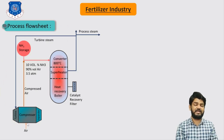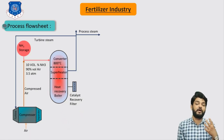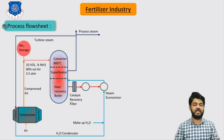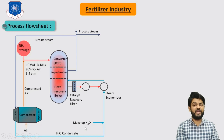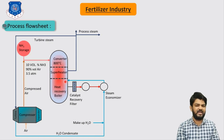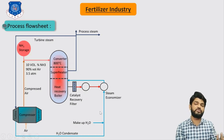Moving to the next point: the product stream coming out of the tube side is sent to the catalyst recovery section, where we recover our precious platinum-rhodium based catalyst. Then it is sent to the steam economizer where we further utilize the heat of reaction to convert water into steam. We pass condensate water or makeup water to the heat recovery section, which converts it into vapor that again passes through the turbine to rotate our compressor. This is the entire water stream cycle operating in the secondary stage to produce steam from the heat of reaction.